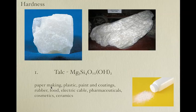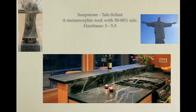We use talc in making paper, paint, plastic, coatings, rubber, food, ceramic, cosmetics, electric cables, pharmaceuticals. If it gets compressed in metamorphism, it can become harder. Soapstone is a rock with 30 to 80% talc in it — these countertops are soapstone, they are beautiful. This is a Japanese sculpture, and some of you are seeing soapstone recently.